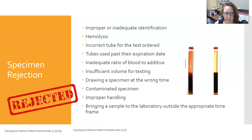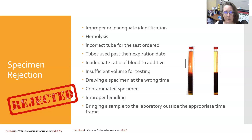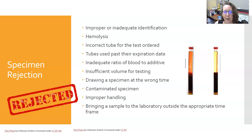Specimen rejections often occur at central processing. Reasons to reject a specimen include: first, improper or inadequate identification. If a tube comes into the lab and is not labeled, even if the nurse knows who it belongs to, you cannot accept it because you cannot be 100% sure whose blood it is.